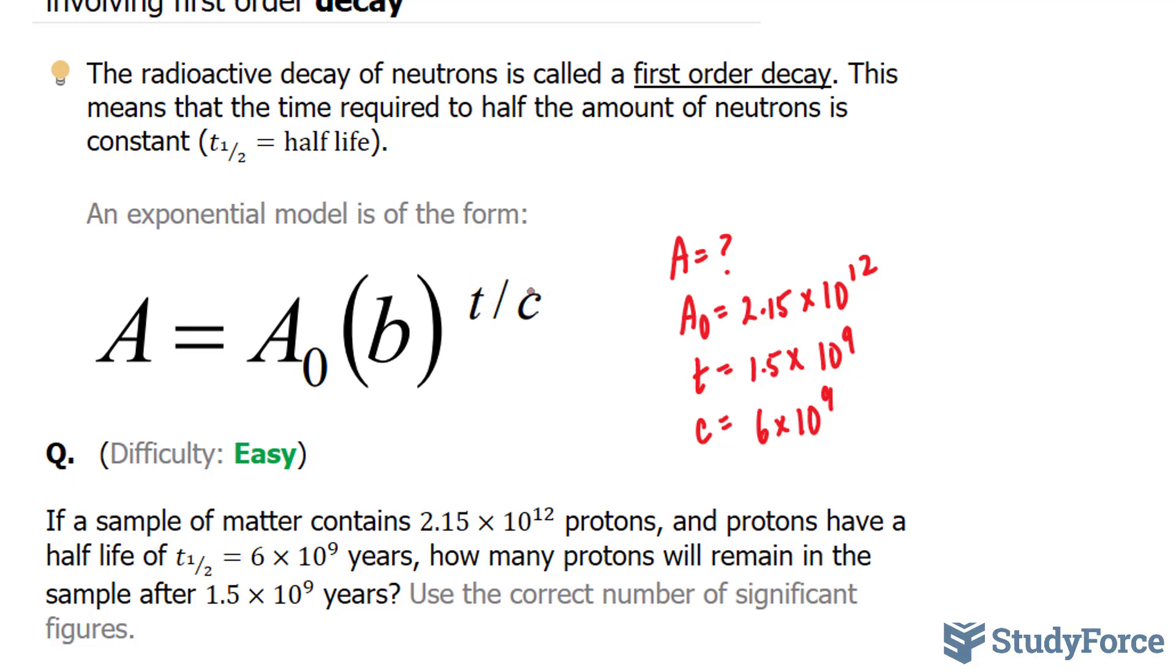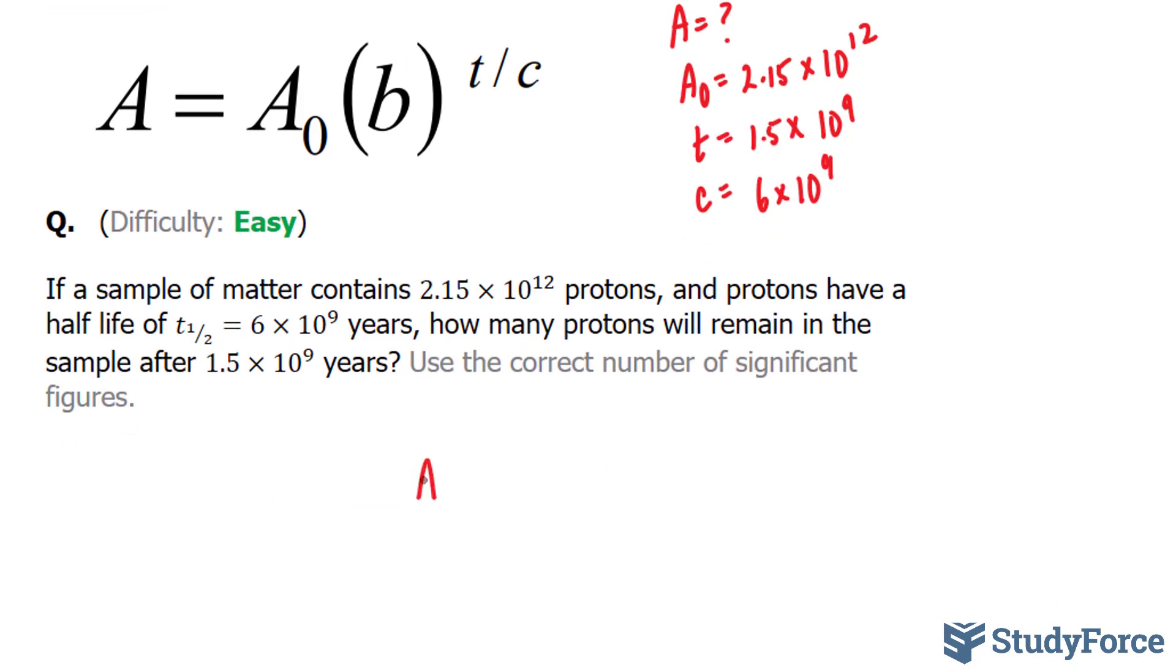Now you might see these letters defined differently in other textbooks. This is just a generic model. Let's go ahead and plug these numbers in. A is equal to 2.15 times 10 to the power of 12 times 0.5, as discussed, to the power of 1.5 times 10 to the power of 9 over 6 times 10 to the power of 9.